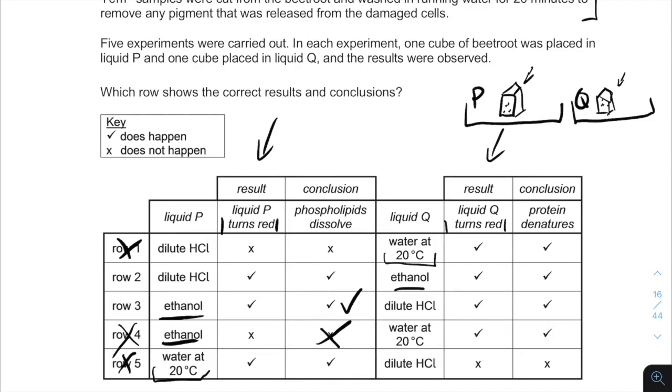So let's go to the other table. Protein denatures usually in very low and very high pHs. With ethanol, we can't expect protein to denature using only ethanol. We can expect protein to denature in HCl, which is a very strong acid. So we can remove row two, and we will know that row three is the correct answer.